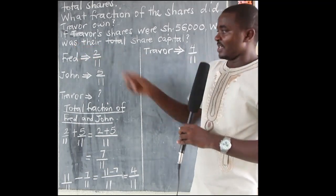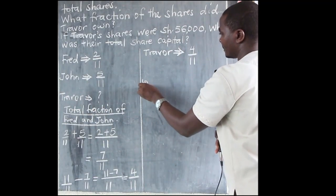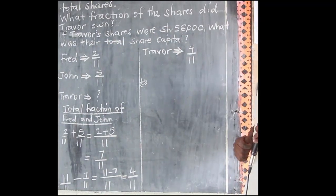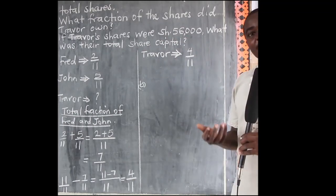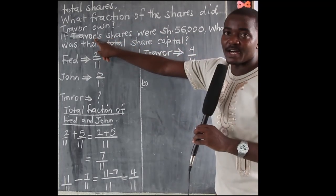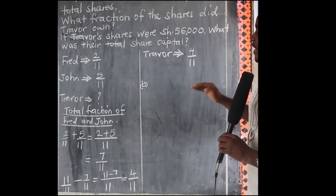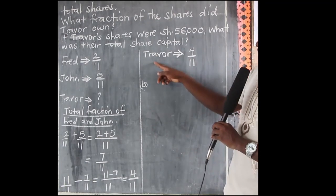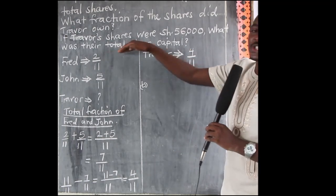That was Part A. Now Part B: if Trevor's shares were 56,000 shillings, what was their total share capital? We are lucky that the amount of money given is for Trevor, and we have already found the fraction for Trevor. So we are going to use this fraction to help us get the total share capital.